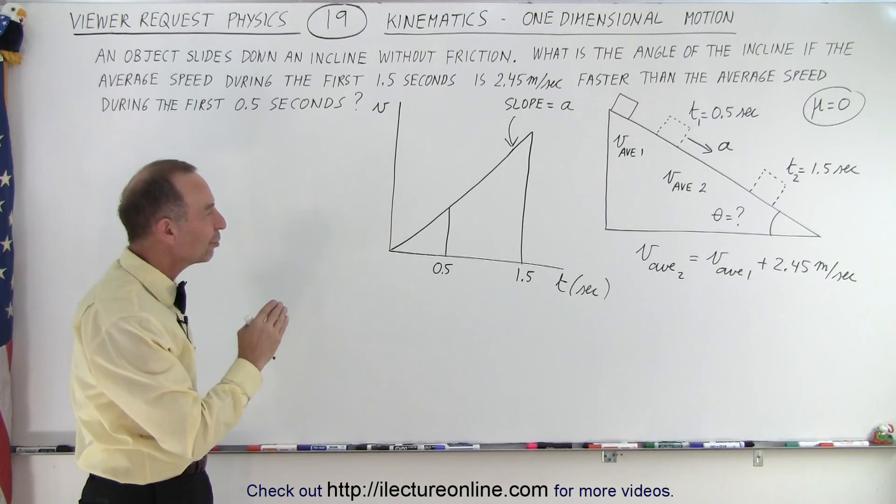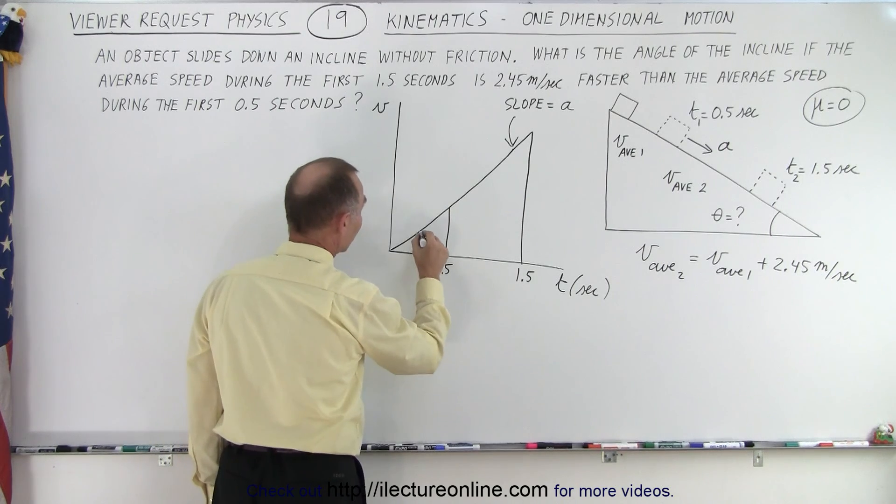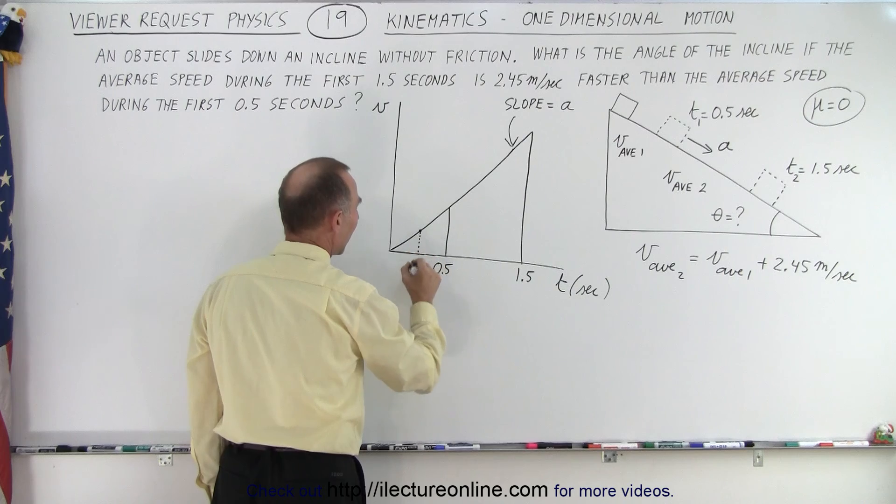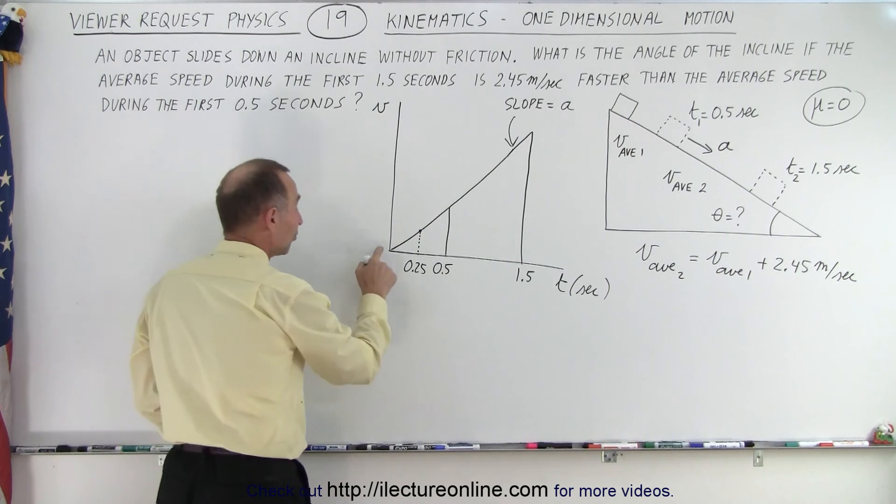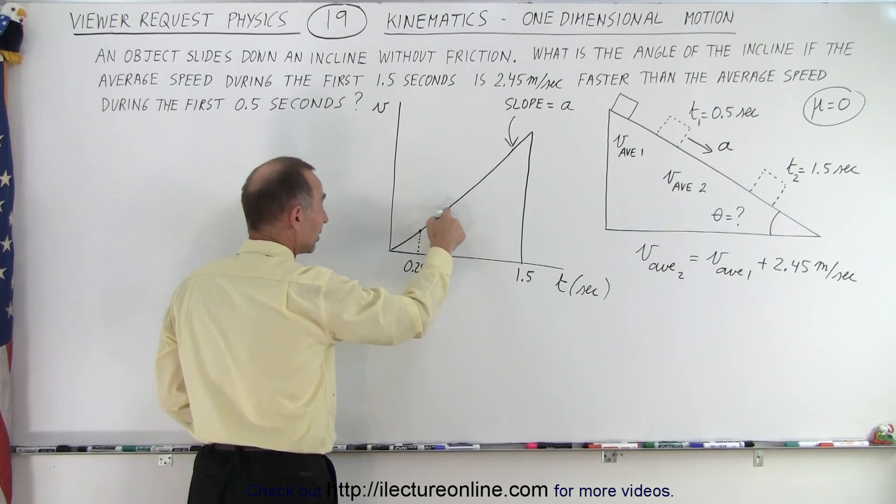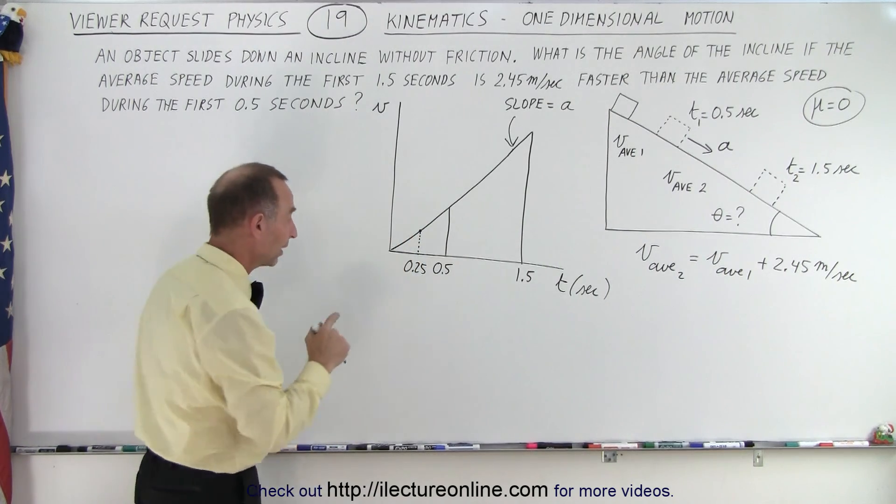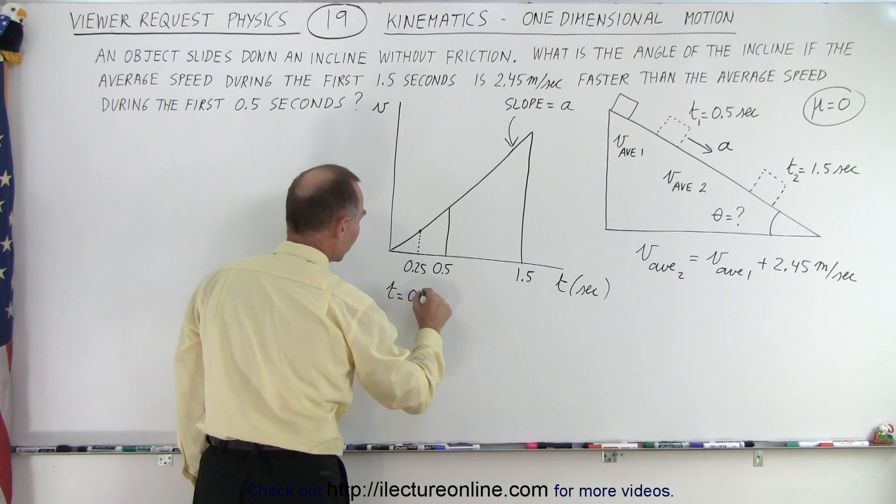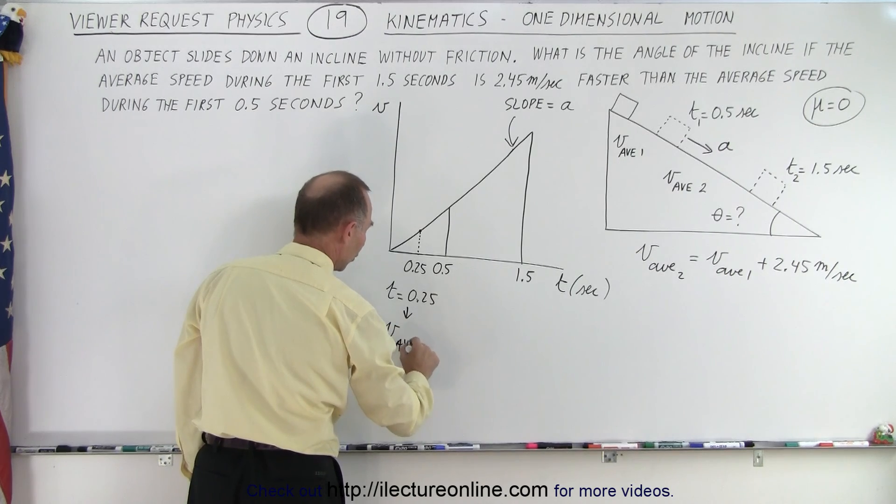What would be the average velocity for the first 1.5 seconds? Well, the average velocity would be equal to the velocity at the halfway point, the velocity at 0.25 seconds. The average velocity when there's constant acceleration, we start from zero and we end up with some velocity over here. The average velocity would be the velocity at the halfway point in time. So we could say that at this point, when t is equal to 0.25, we have our V average 1.